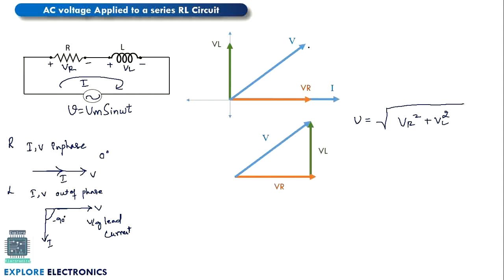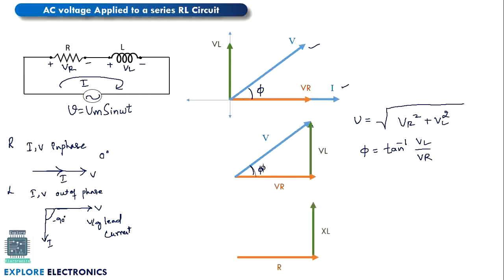V and I have a phase difference of φ — let me call this φ the power factor angle. So φ can be written as tan⁻¹(VL / VR), using the voltage triangle. In a similar way, we can also write the impedance triangle. This gives resistance R with respect to VR, and XL — the reactance of the inductor — with respect to VL, and the total impedance Z of the circuit.